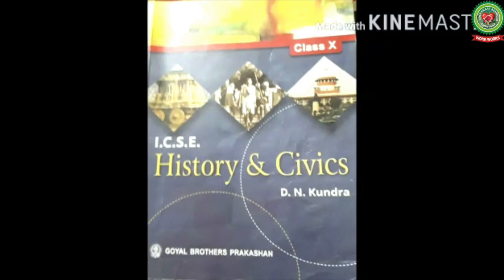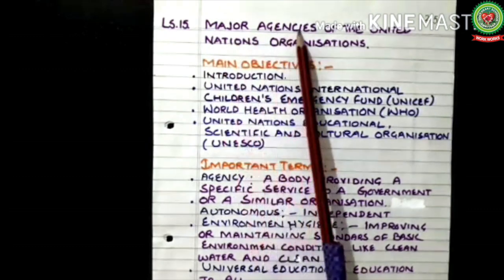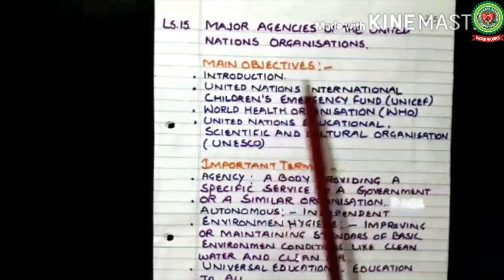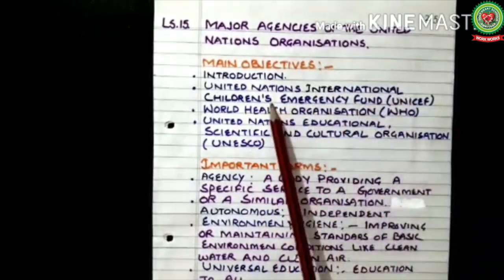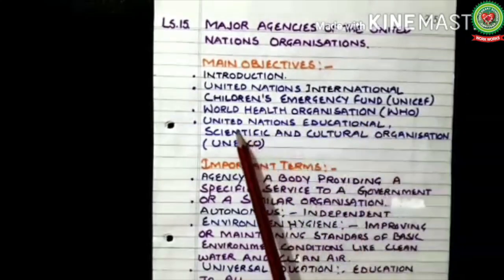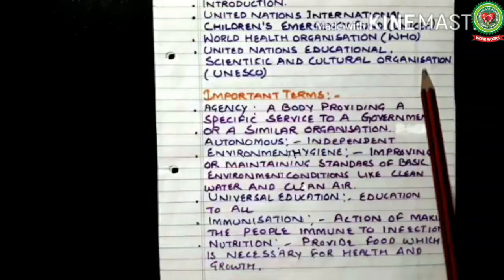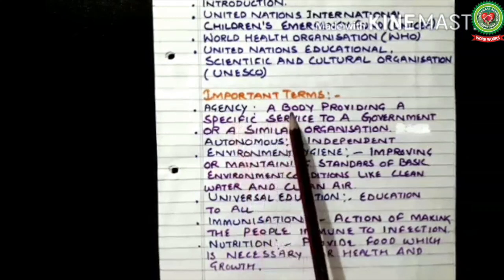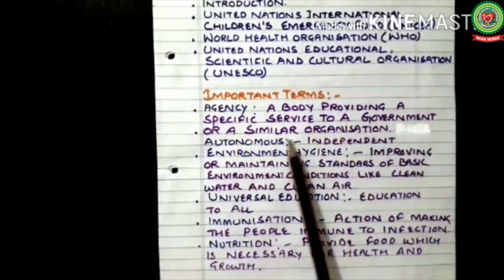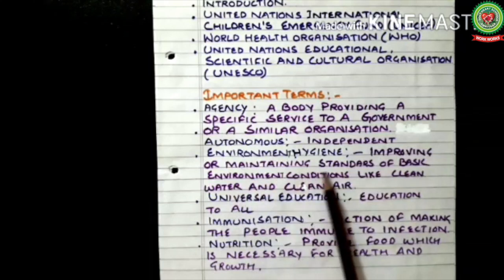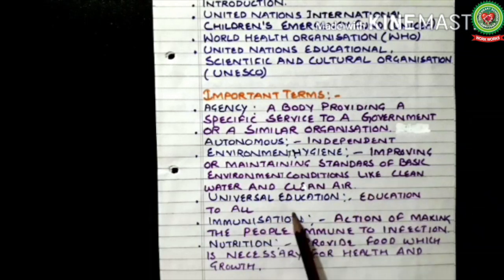Hello class. Today we are going to start with the topic: Major Agencies of the United Nations Organization, which is Lesson 15, page number 215. Main objectives: Introduction, UNICEF (United Nations International Children's Emergency Fund), WHO (World Health Organization), and UNESCO (United Nations Educational, Scientific and Cultural Organization). Before discussion of the topic, we must know the following terms: agency — a body providing a specific service to a government or similar organization; autonomous — independent.